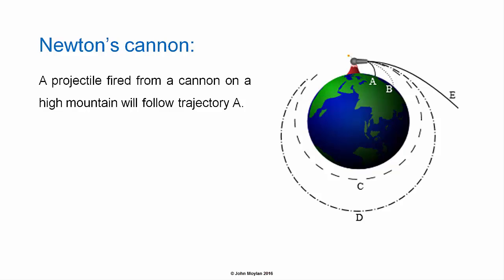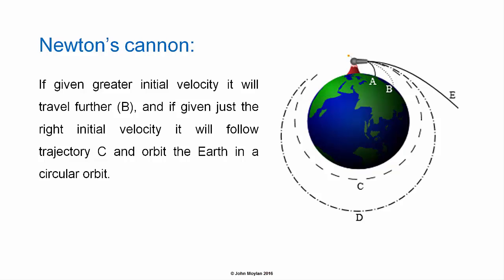In this thought experiment, a projectile fired from a cannon on a high mountain will follow the trajectory marked A on the diagram. It will follow a parabolic trajectory falling back towards the earth. If given greater initial velocity, it will travel further and follow the trajectory marked B, in which it will still follow a parabolic trajectory falling back towards the earth, but will travel further before it actually impacts with the surface of the earth.